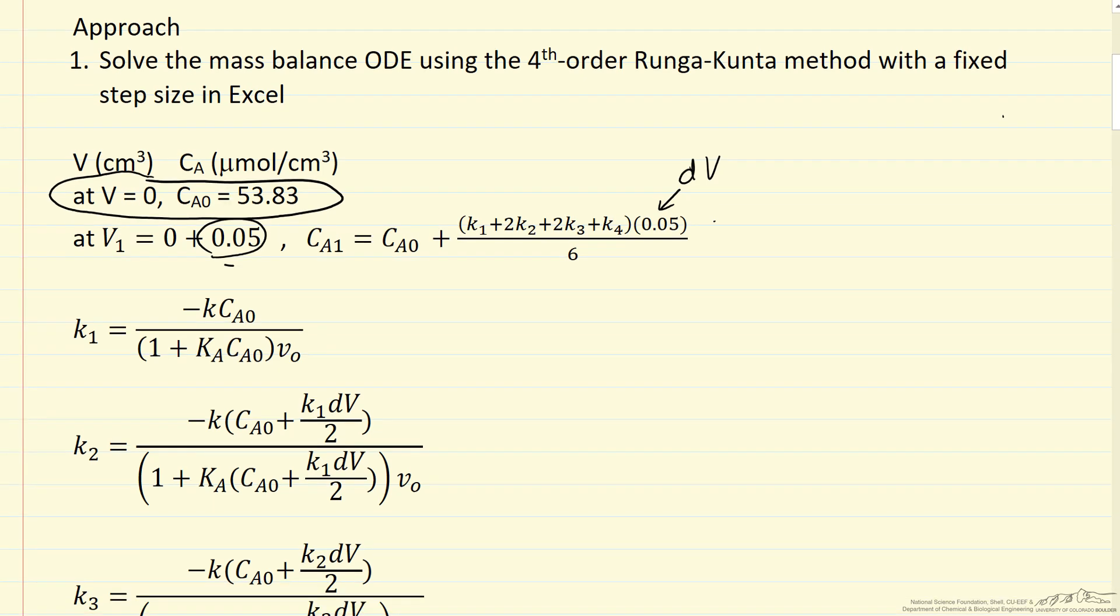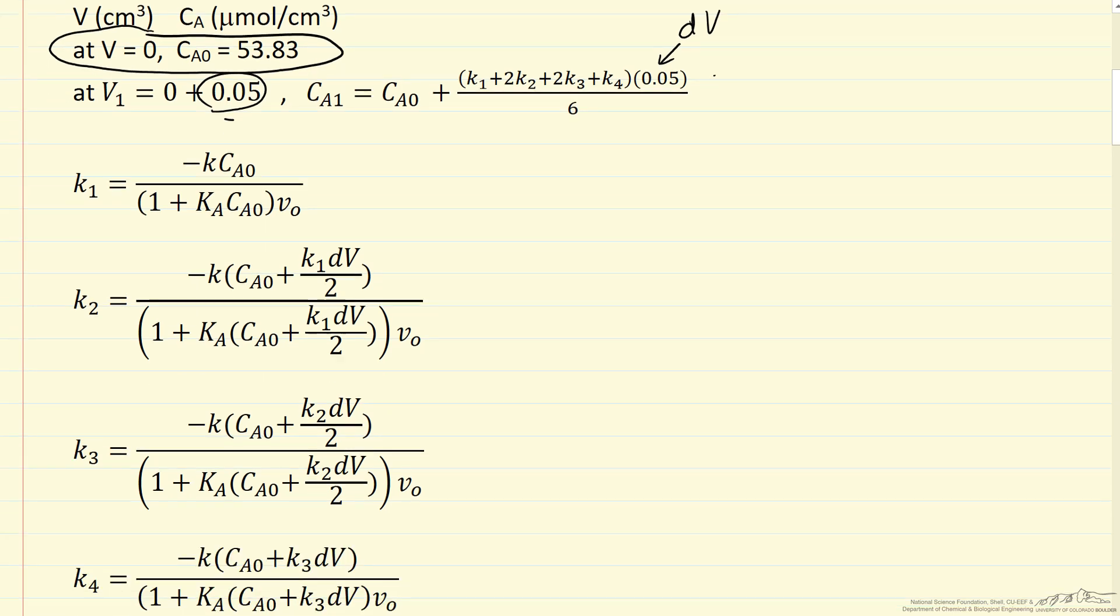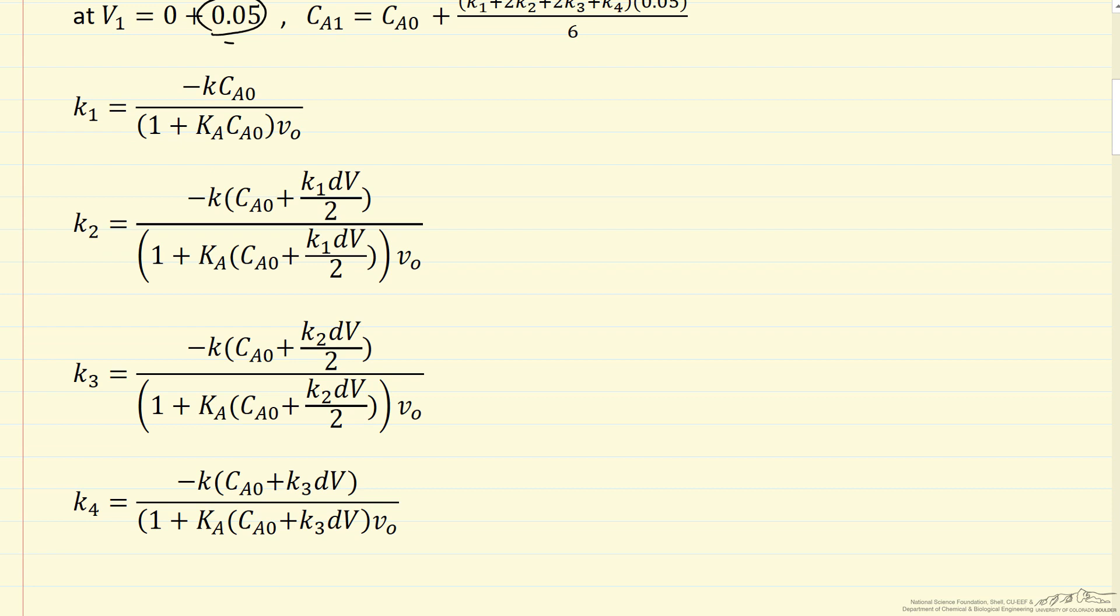K1's evaluated at the inlet. K2 is to account for the fact that the concentration actually changes slightly within that small DV. K3 and K4 are just the approach used for the Runge-Kutta integration.